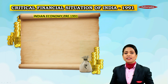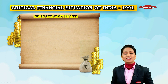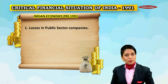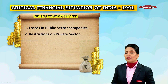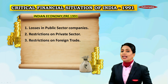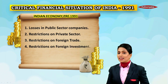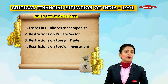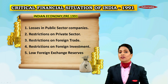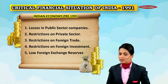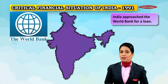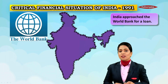Our Forex was barely enough to last roughly three weeks of essential imports. To summarize India's economy in the pre-1991 era: we had losses in public sector companies, restrictions on the private sector, restrictions on foreign trade and foreign investment, and a problem of low Forex reserves. India approached the World Bank to bail us out and asked for a loan.